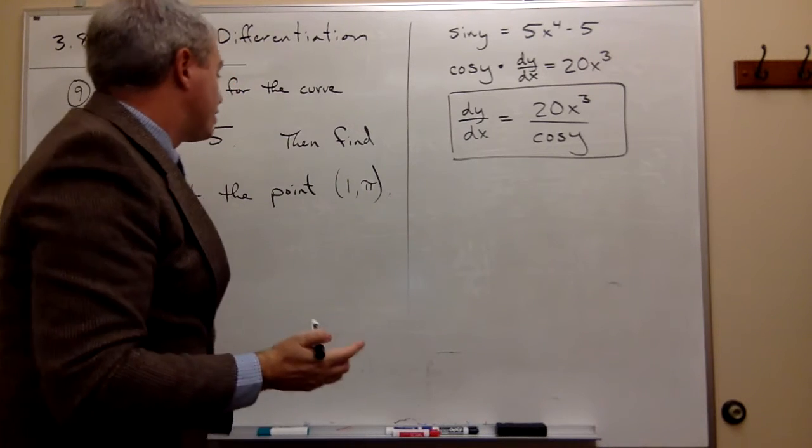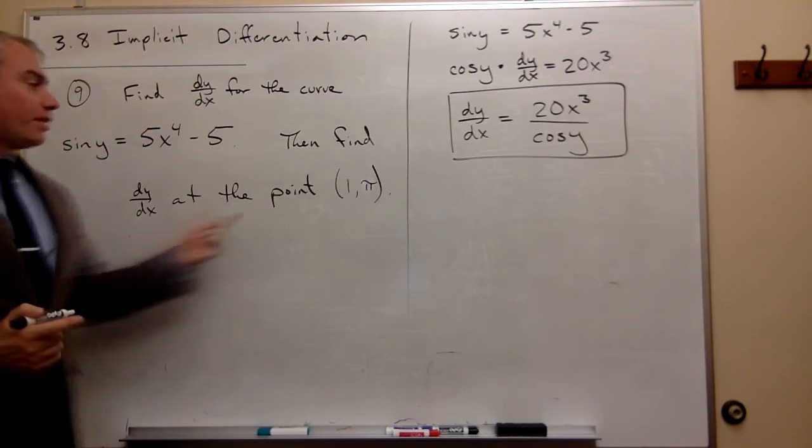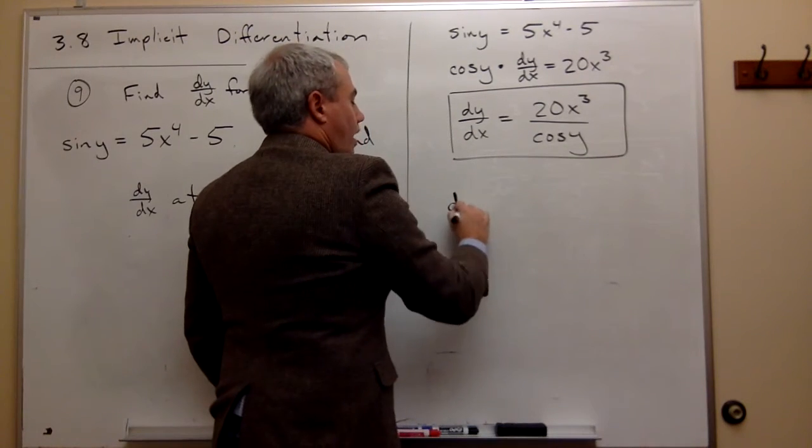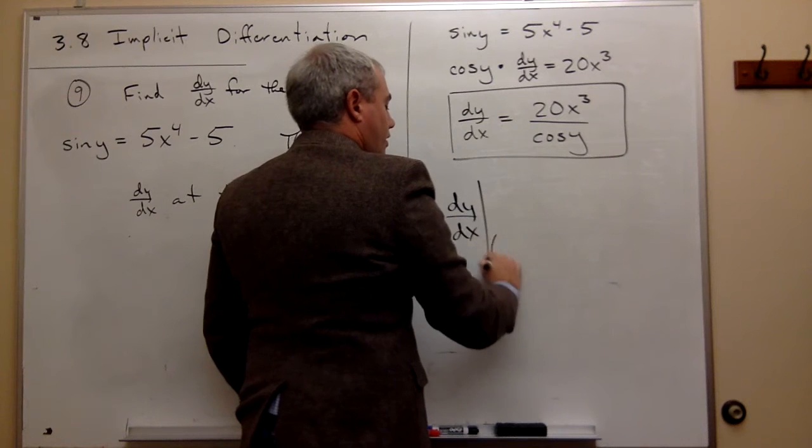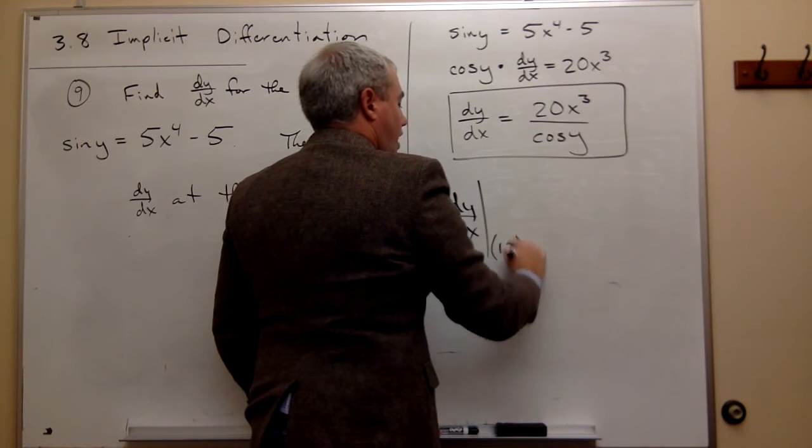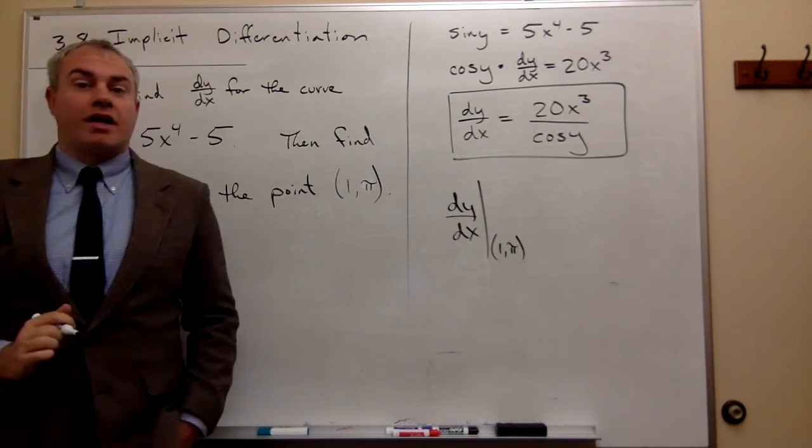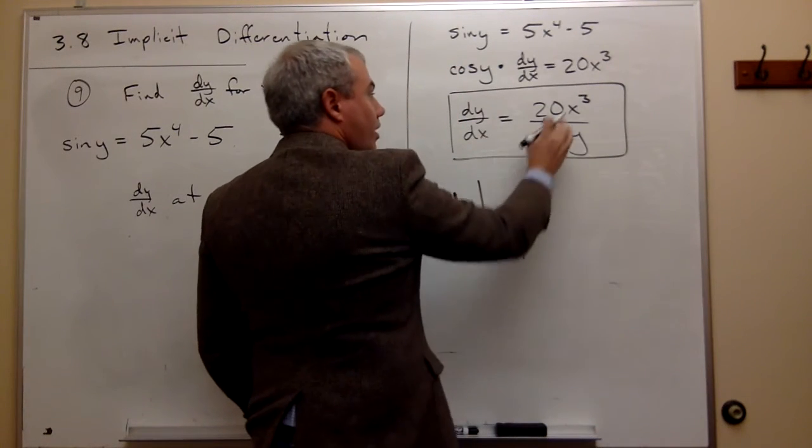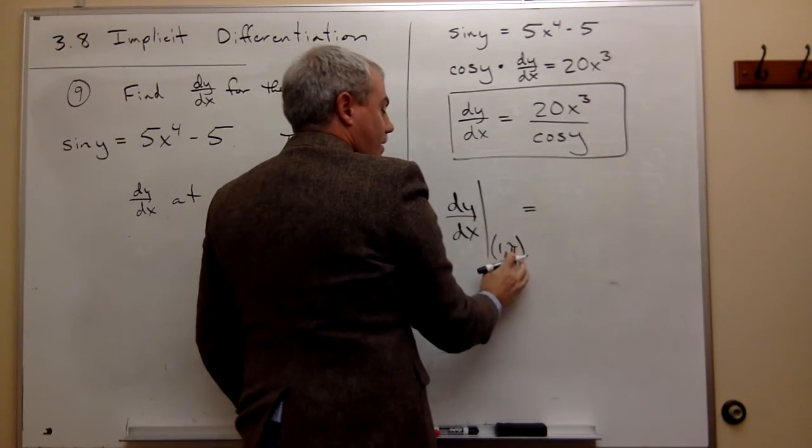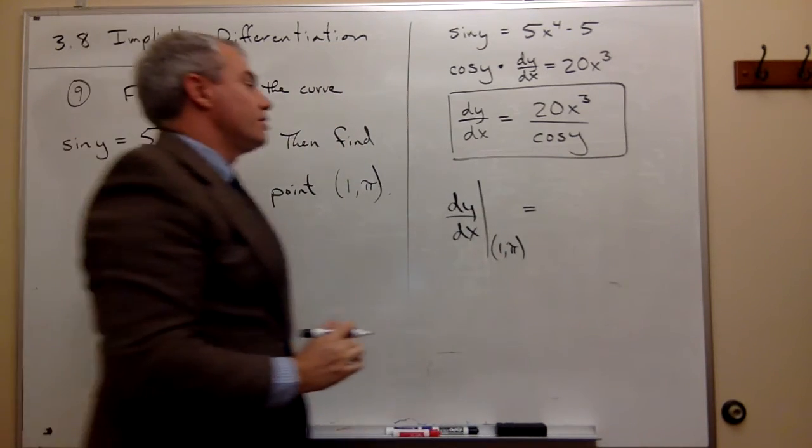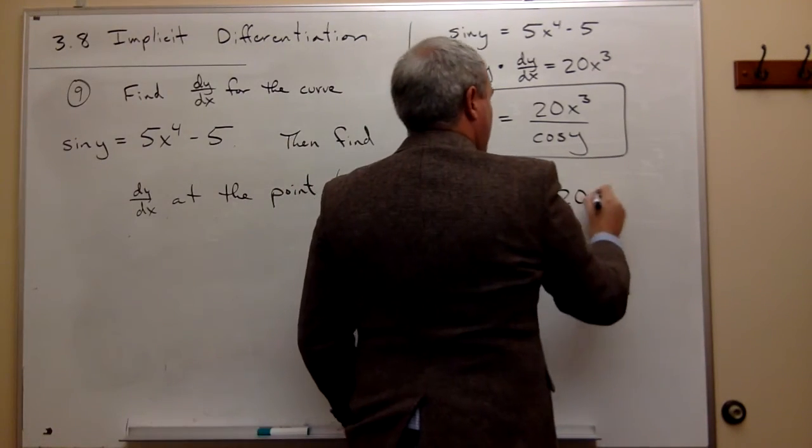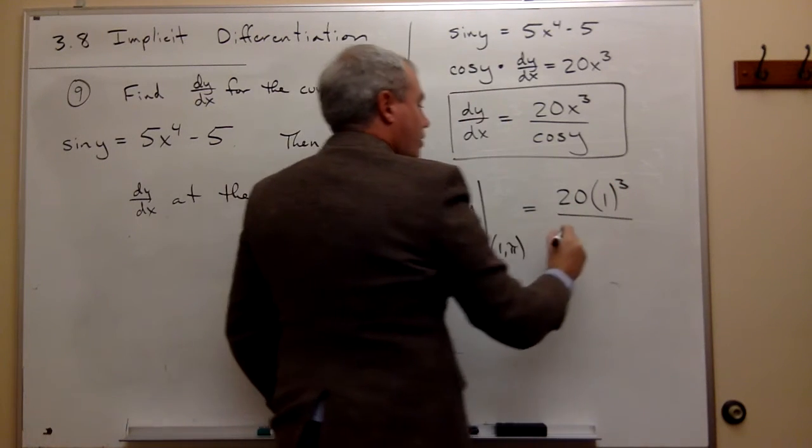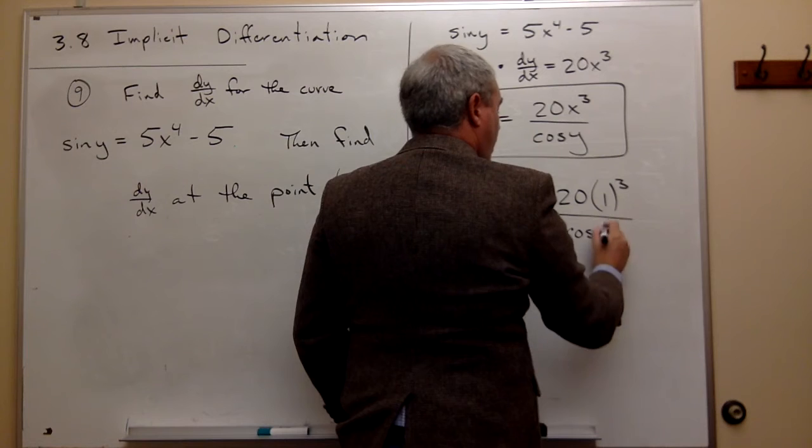Now we want to evaluate that derivative at the point (1, π). So we want to find dy/dx evaluated at the point (1, π). The way that we're going to do that is we're going to take 1 and plug it in for x, take π and plug it in for y. So we get 20 times 1 cubed divided by cosine of π.